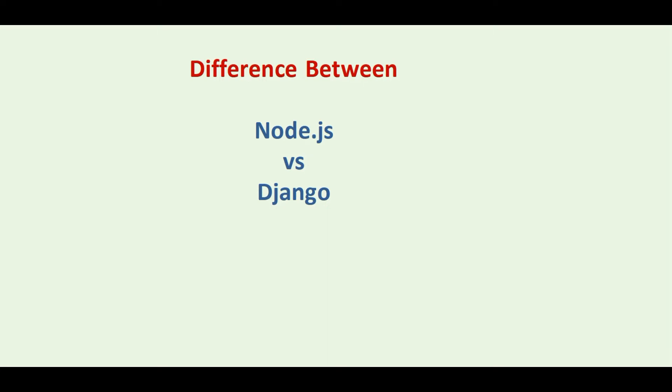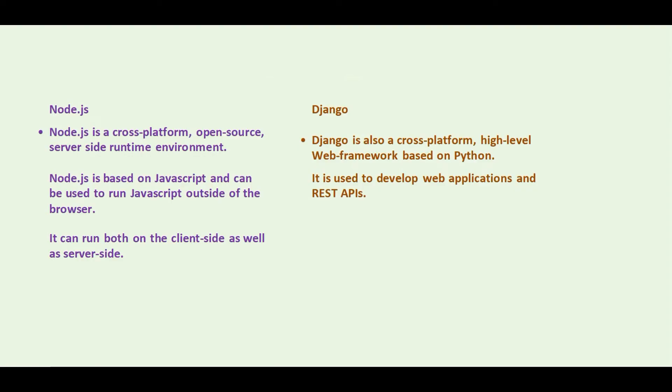In this video, we are going to see the difference between Node.js and Django. Node.js is a cross-platform open-source server-side runtime environment. Node.js is based on JavaScript and can be used to run JavaScript outside of the browser. It can run both on the client side as well as server side.